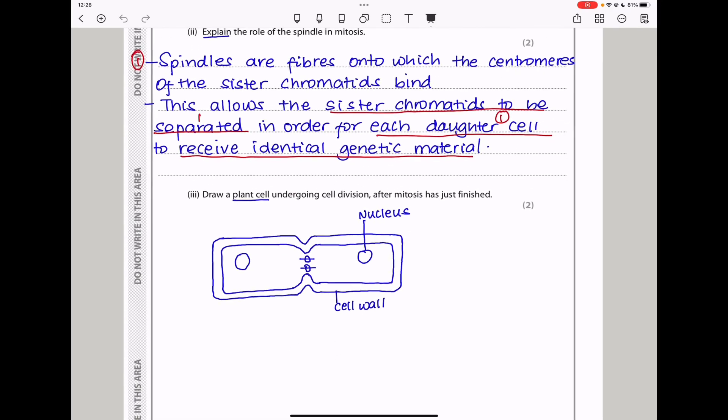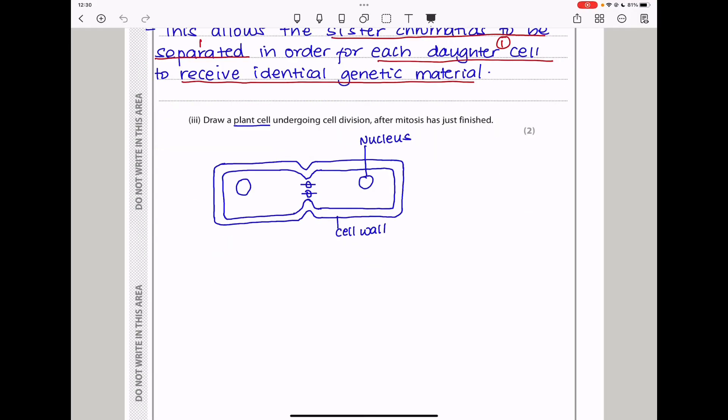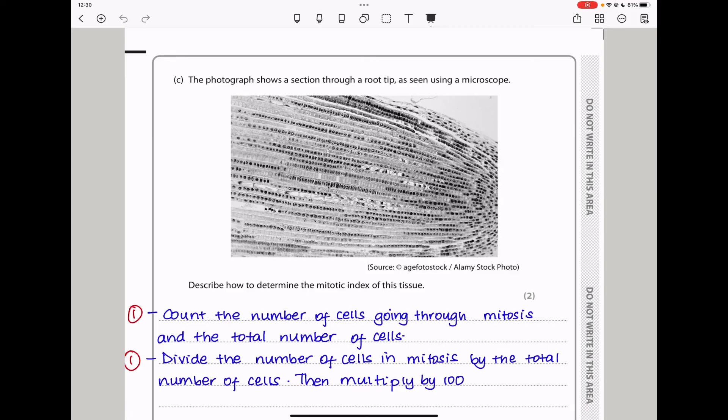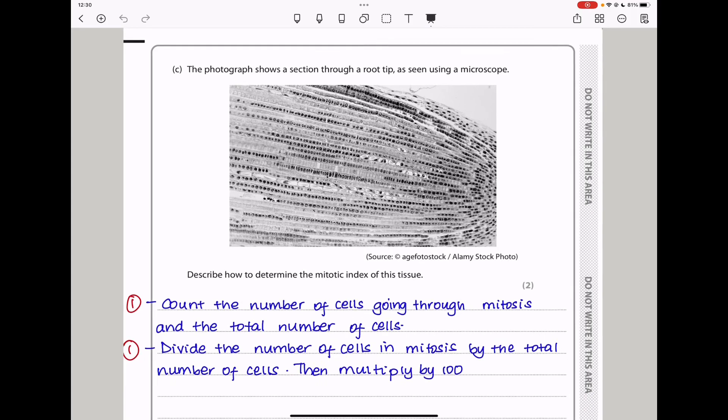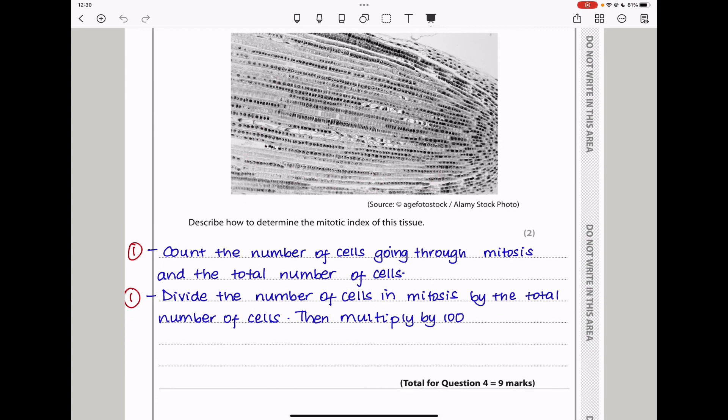Going down here, they say, draw a plant cell undergoing cell division after mitosis has just finished. This is how the plant cell is going to look just before it divides. It has a cell wall. There is a nucleus in each. Then there are these vacuoles in the middle through which the cellulose is going to form in order for the cell to divide fully. Moving on. Here they say the photograph shows a section through a root tip as seen using a microscope. This is a structure of how it looks in a microscope.